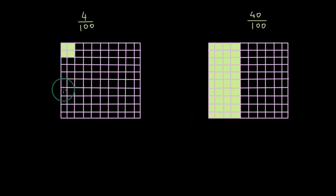In both the grids I have 100 equal parts. On the left grid I have shaded 4 parts out of those 100 in green, and on the right hand side I have shaded 40 of those 100 parts in green.